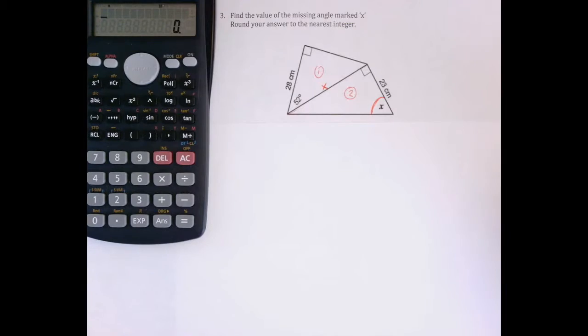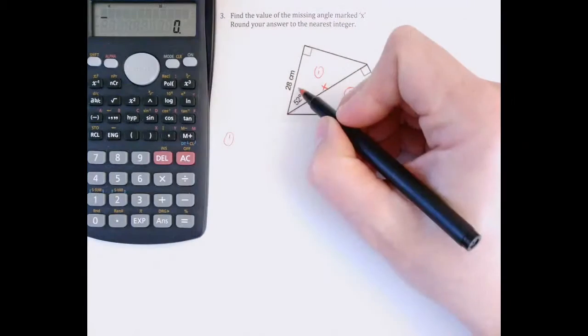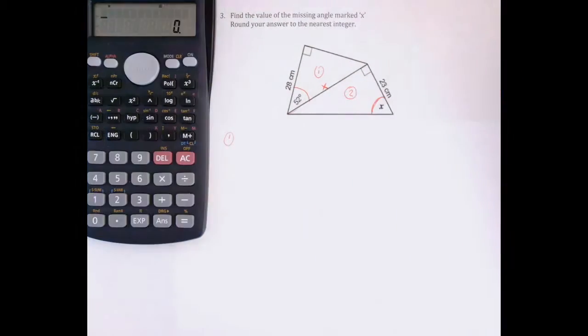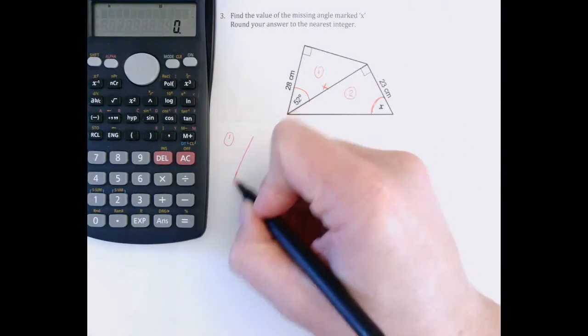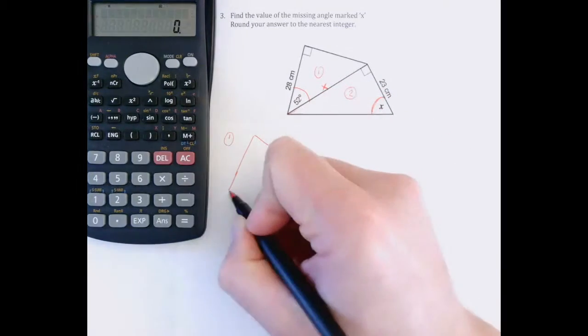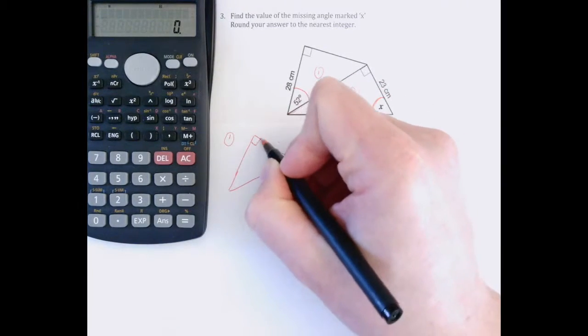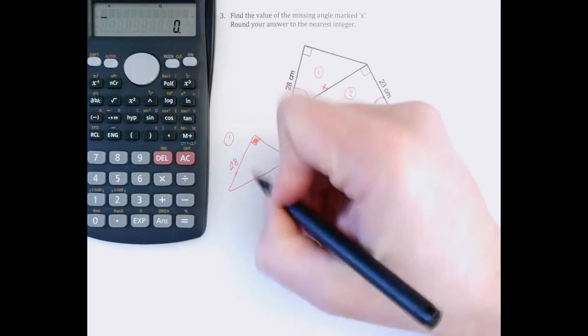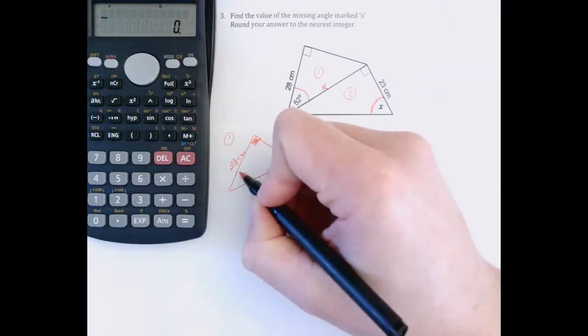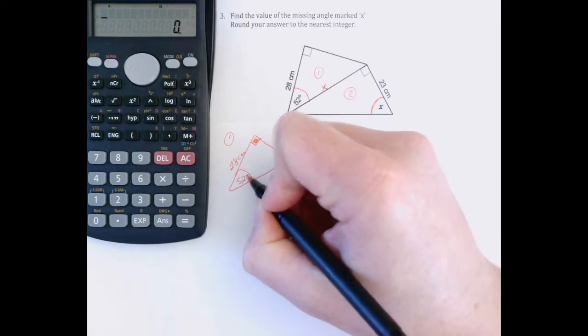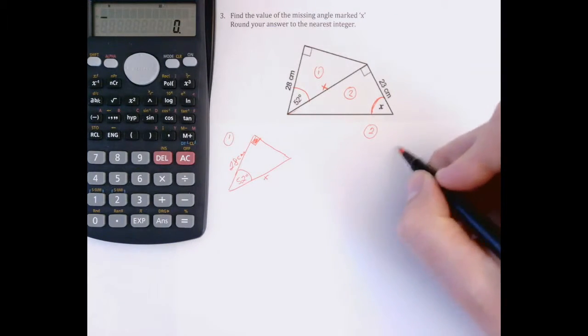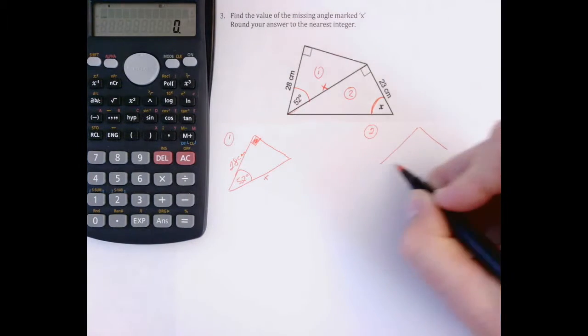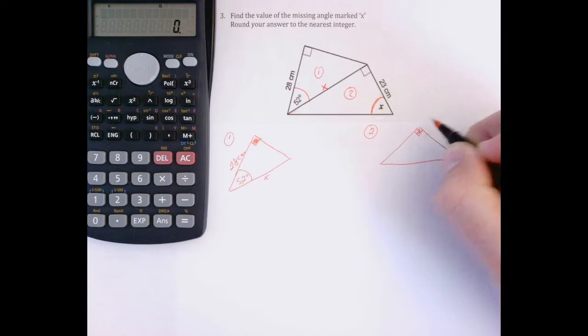So I'm going to start by working in triangle one. In triangle one, I'm going to decide which angle I'm working with. It's going to be the 52 degree angle. Then I'm going to label it. I'll redraw it so it's a little bit easier for us to work with. This is 28 centimeters. Here's an angle of 52 degrees. And what we're looking for is this, because in triangle two, that would be the same side.